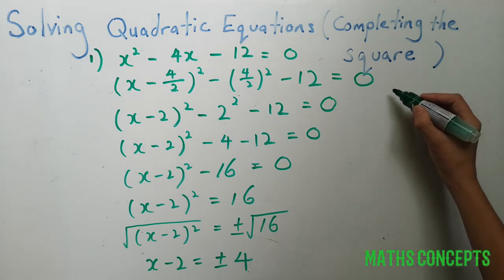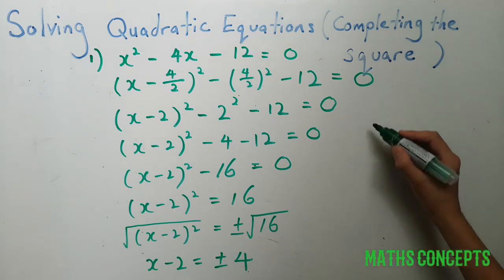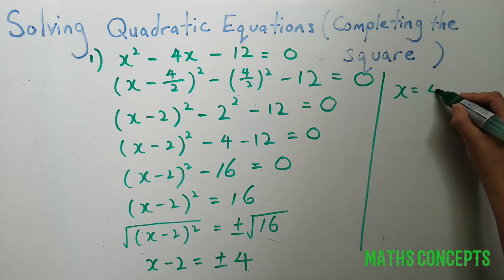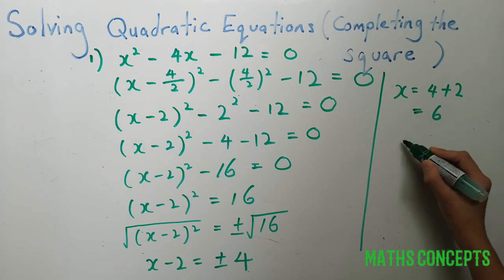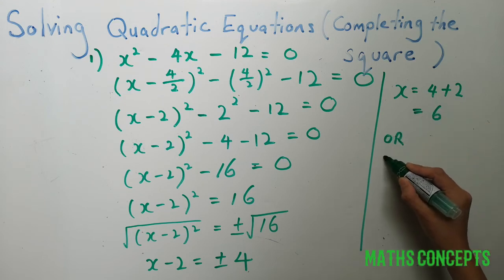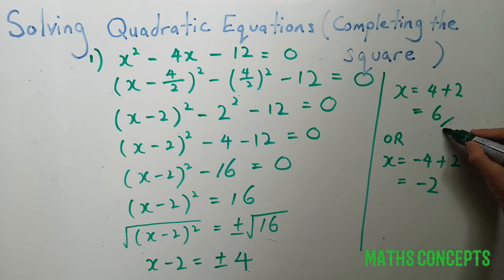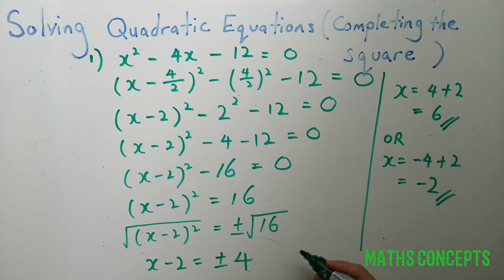Okay, so that gives us the two answers, which is x equals to 4 plus 2 equals to 6, or x equals to negative 4 plus 2, which is equal to negative 2. All right, so this method is completing the square.